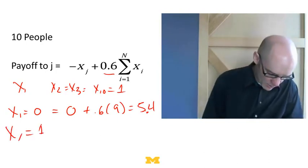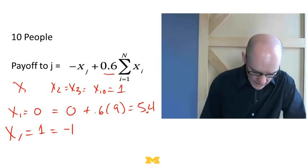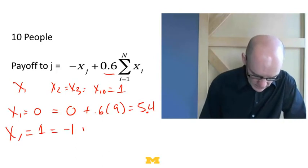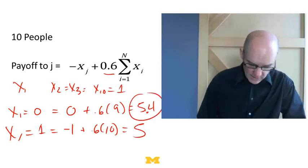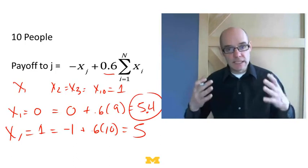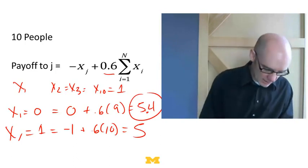If I were to cooperate, it's going to cost me 1. And what I'm going to get is 0.6 times 10, which is 6, minus 1, which is 5. But 5.4 is bigger than 5, so it's in my interest to put x1 equals 0.